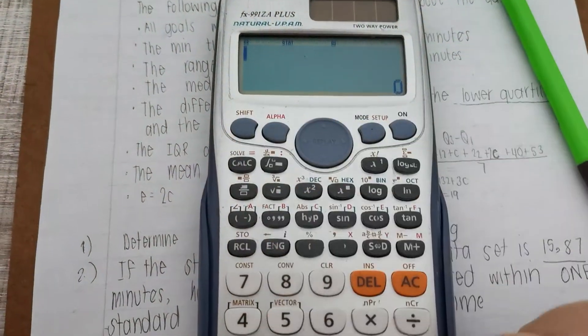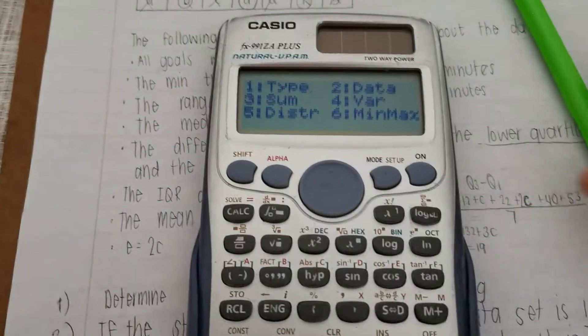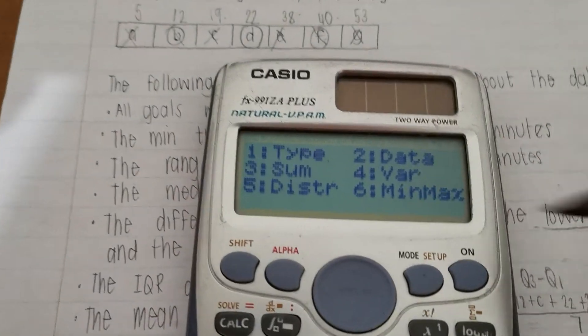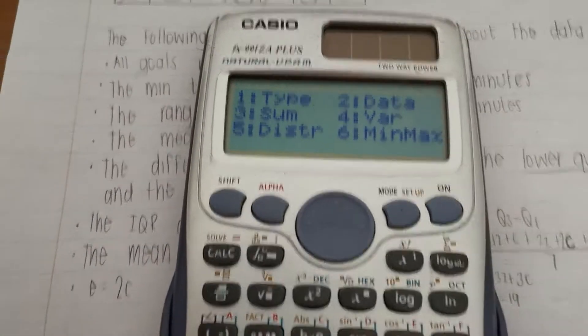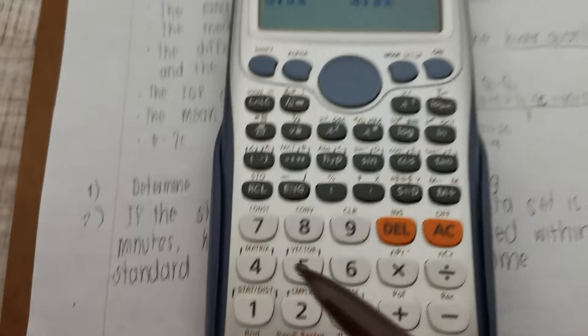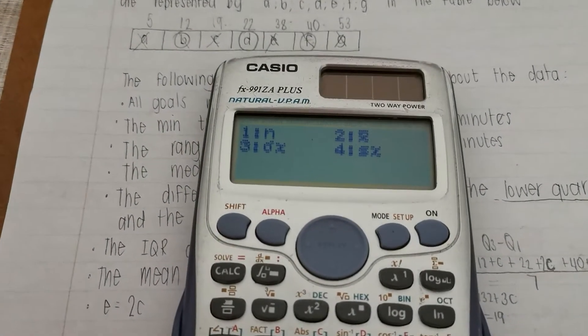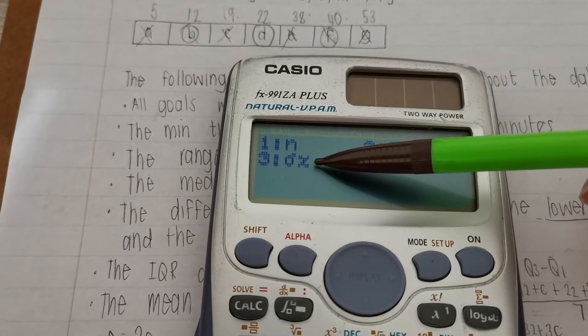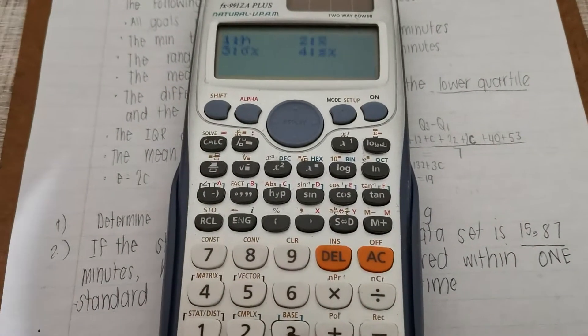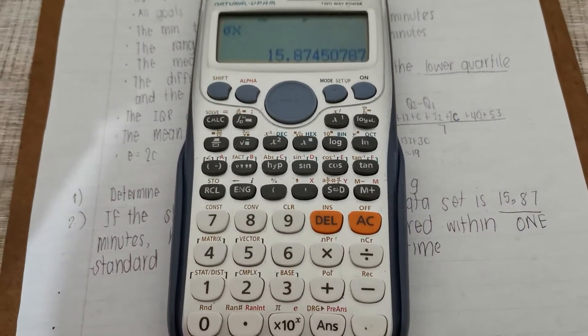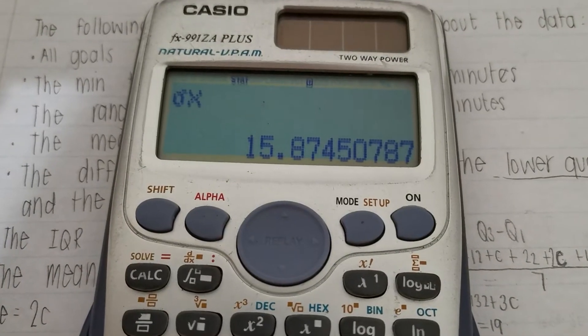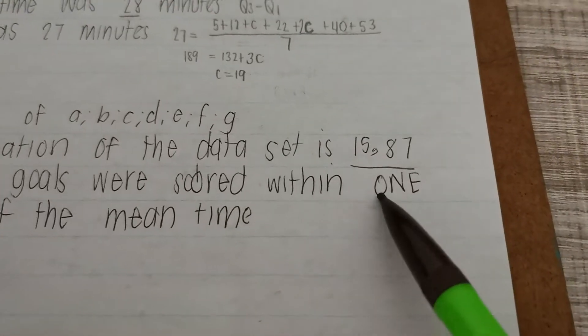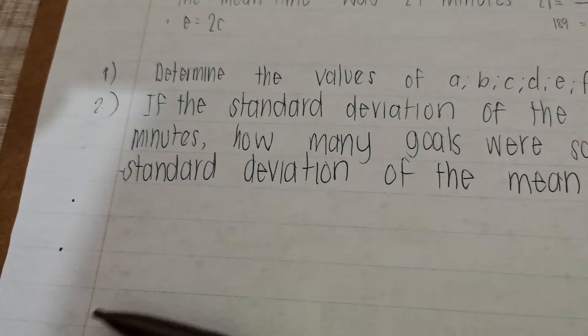I'm going to press shift 1. Now it unlocks a new stat menu. We are looking for variance. So option 4, and then it brings up this. For standard deviation, you're looking at this number over here. So you press option 3 equals. And there we go, 15.87. So they told us it's 15.87 minutes.